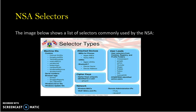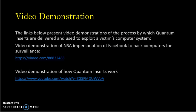NSA selectors. The image below shows the different types of selectors that the NSA can use and normally does use in these types of quantum intercepts. Video demonstration. There are two different links here. The first shows a video demonstration of the NSA impersonating Facebook to hack into computers of users for surveillance purposes, and the second shows a demonstration of how quantum inserts work.